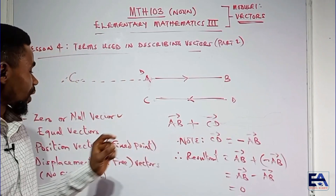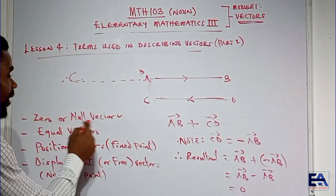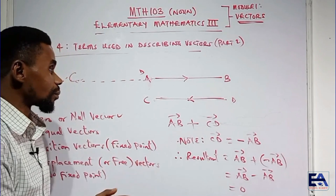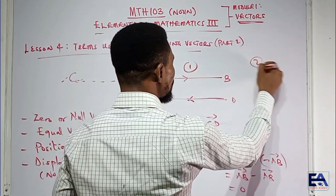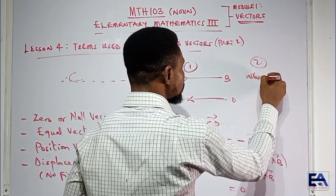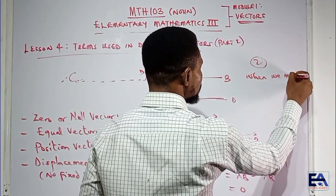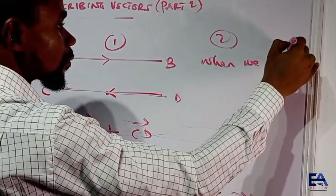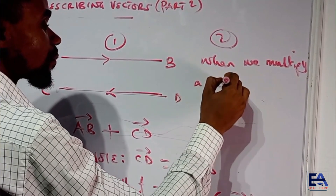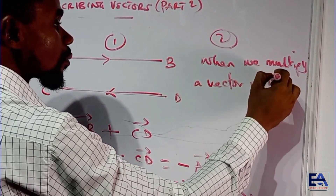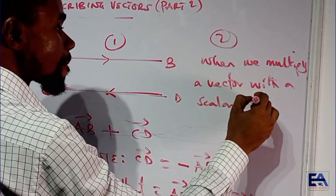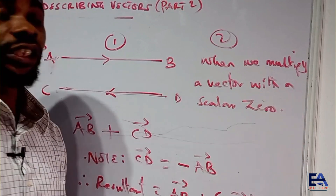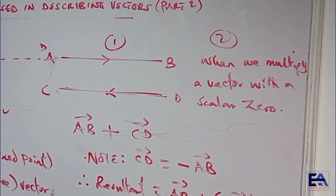Condition number two is when we multiply a vector by a scalar zero.